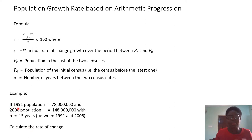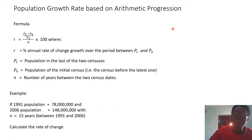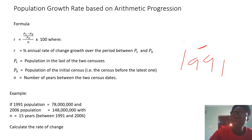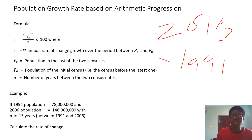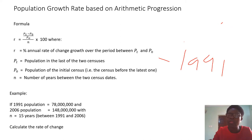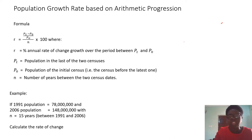Here is an example. If in 1991 the population was 78 million, and in 2006 the same population is now 148 million, then N — the number of years — is 2006 minus 1991, which gives 15 years. Now we know the population in the initial year as P0, and the population as Pt. All we need to do is substitute into the formula we have been given.